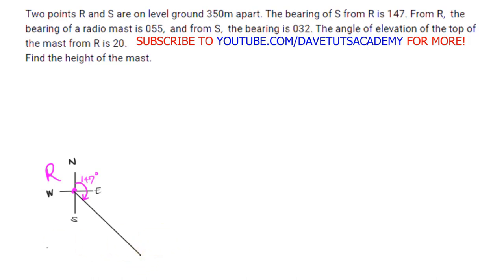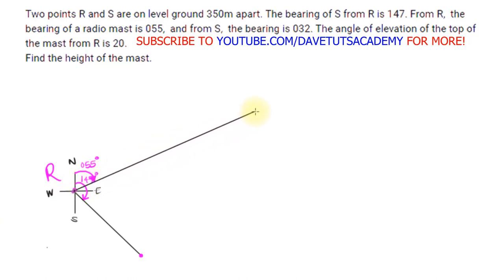The other point at the base of that line will be point S. Now continuing the interpretation: from R, the bearing of the radio mast is 055 degrees. 055 is less than 90, so it's in the first quadrant, between north and east. We mark that direction at about 55 degrees from north, and draw the line from R toward the mast.